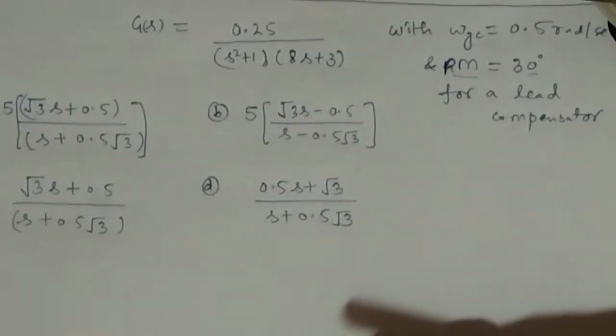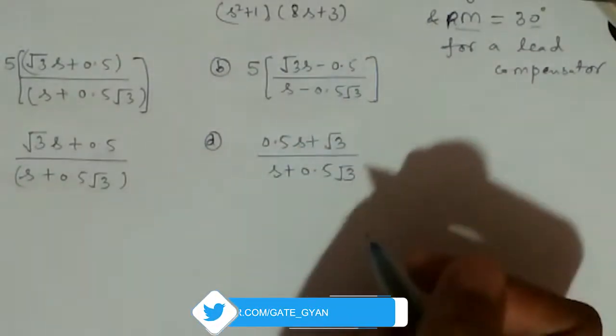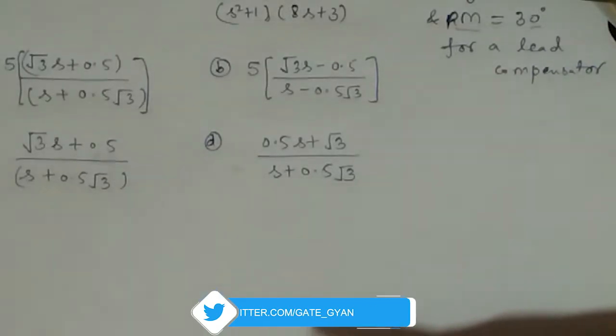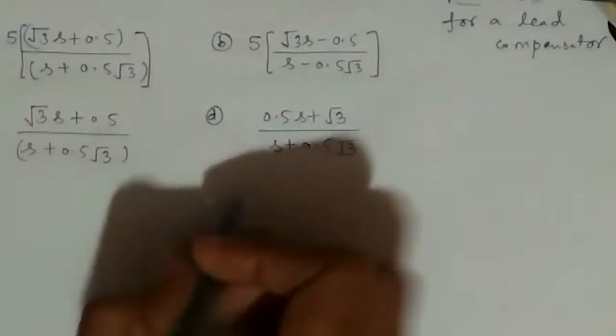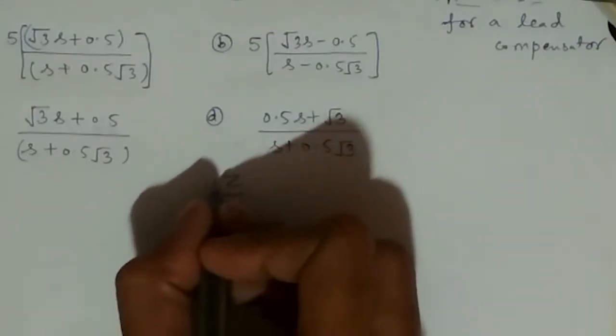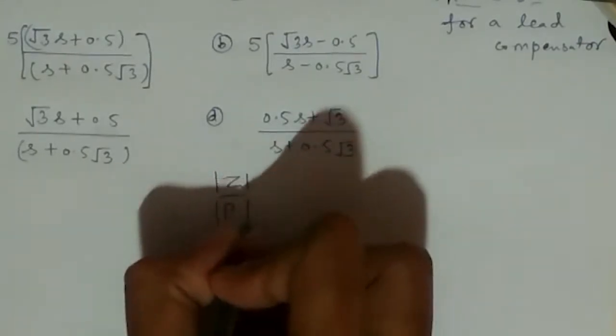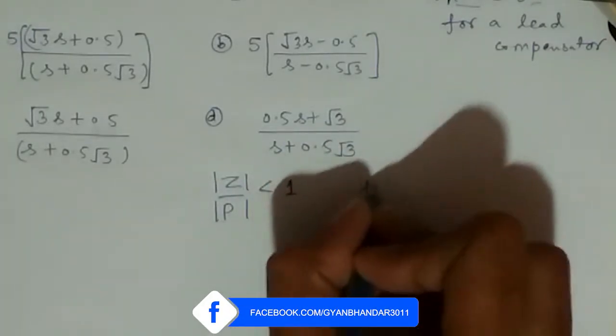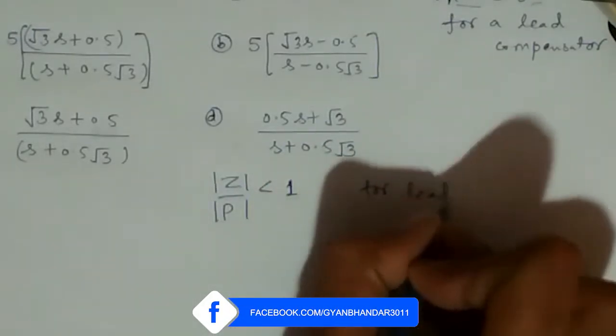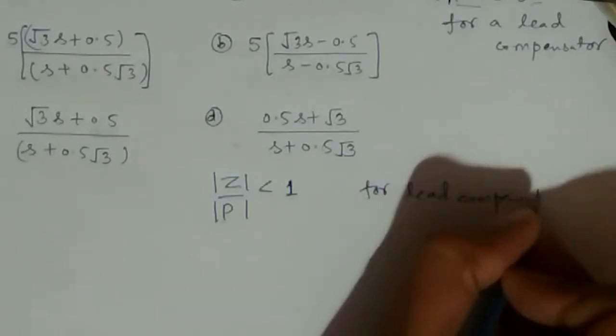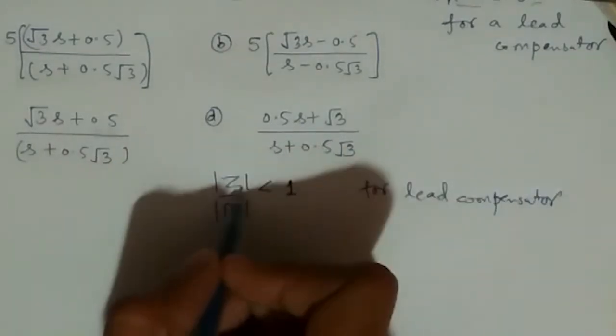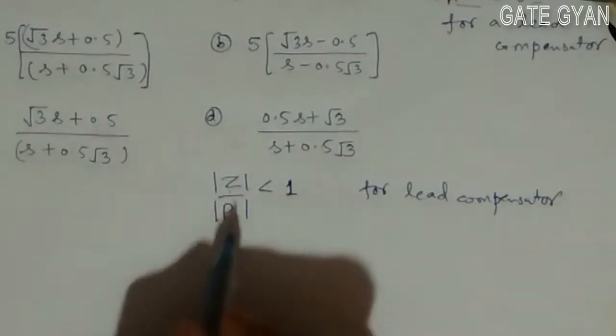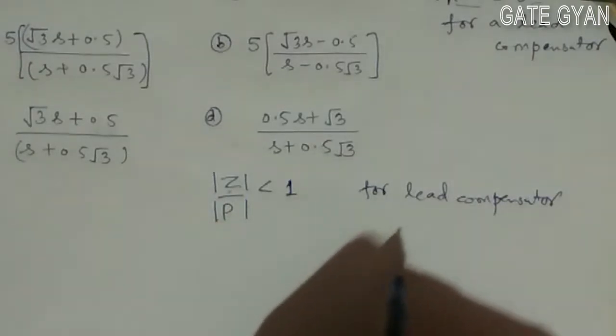First, we will go through the options to check which are lead compensators. For a lead compensator, |z|/|p| must be less than 1, where |z| is the magnitude of zeros and |p| is the magnitude of poles of the transfer function.